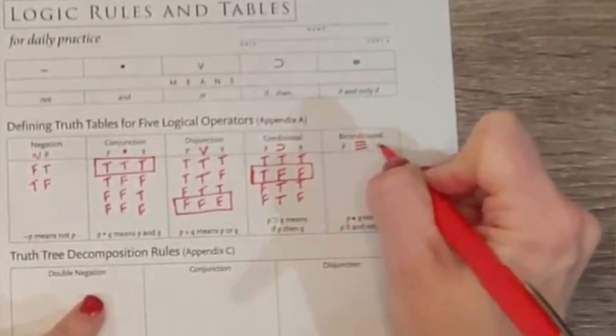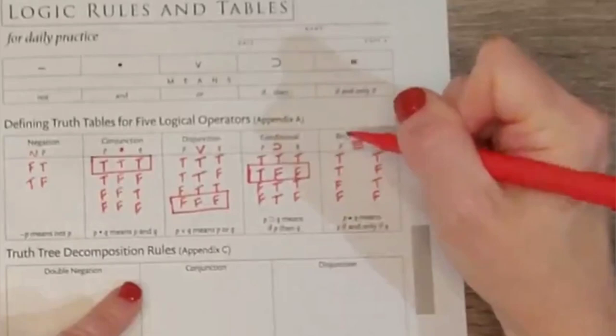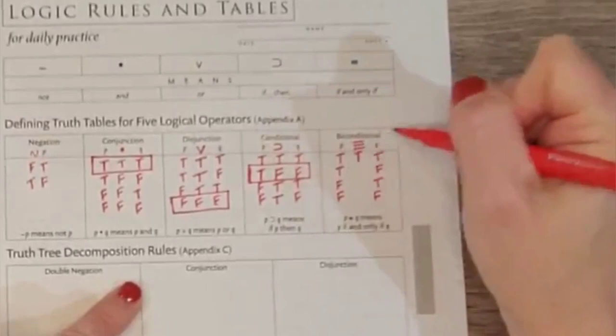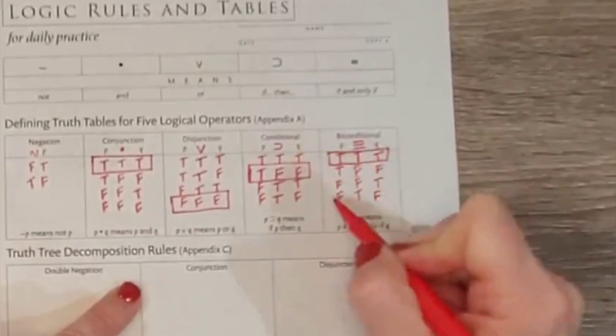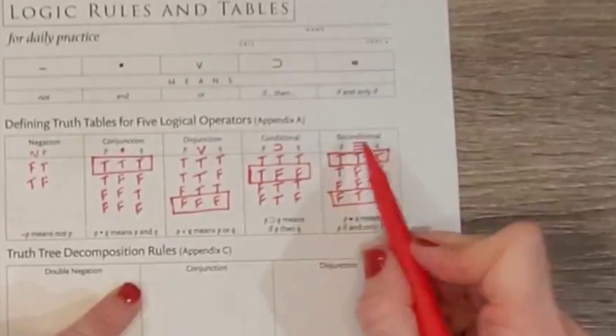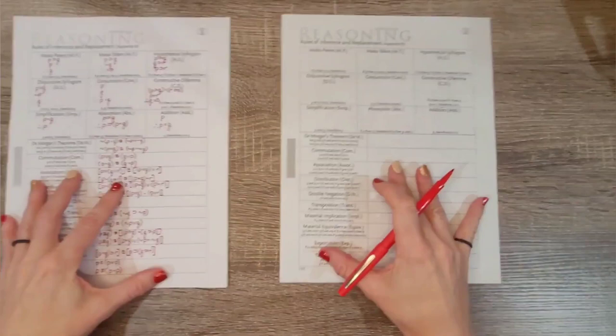Now this is your biconditional — you have your three lines, P if and only if Q. P can be true, true, false, false, and Q is true, false, true, false. If P is true and Q is true, then it's true. If P is true and Q is false, then it's false. If P is false and Q is true, it's false. And if P is false and Q is false, then it's true. On the biconditional, it's important that they match. If they're both true, it's true; if they're both false, it's true because we want these to match. That's what you want to think through for Appendix A.